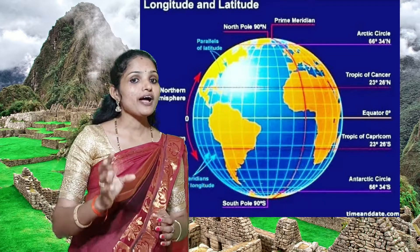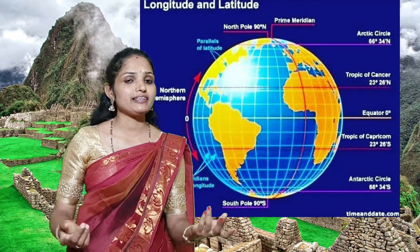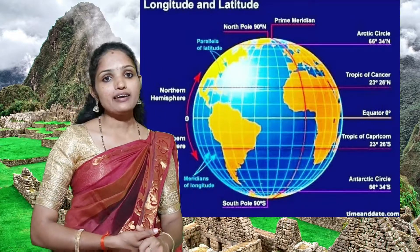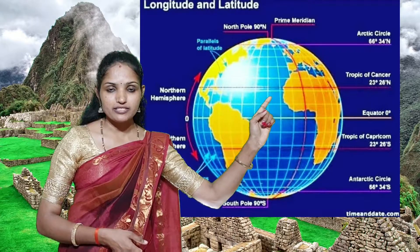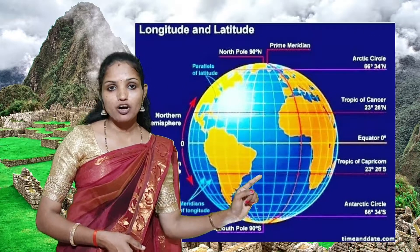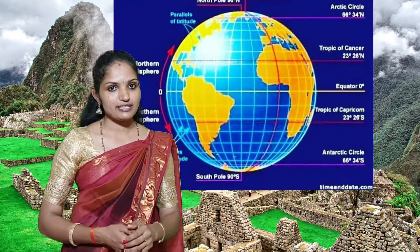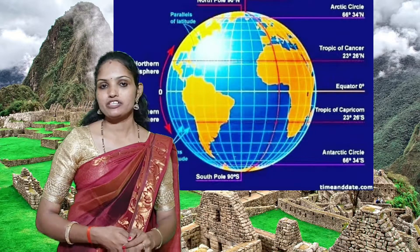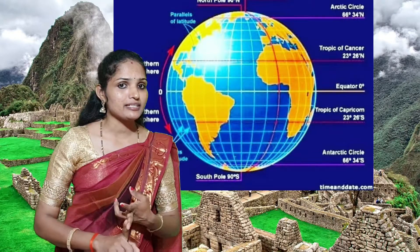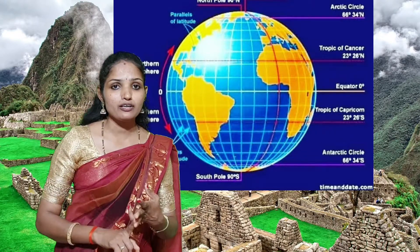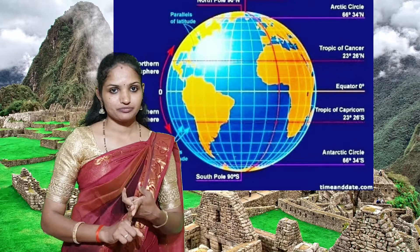There are five important latitudes. Do you know which they are? They are the Equator, Tropic of Cancer, Tropic of Capricorn, Arctic Circle, and Antarctic Circle.